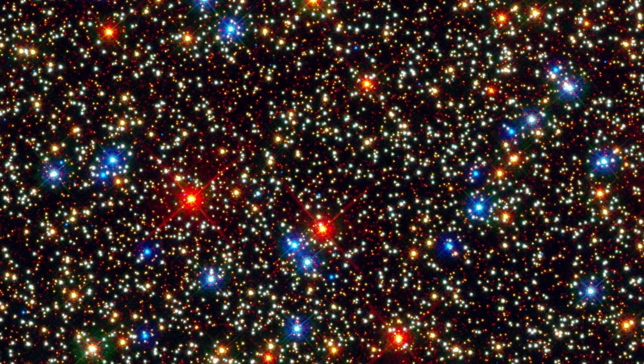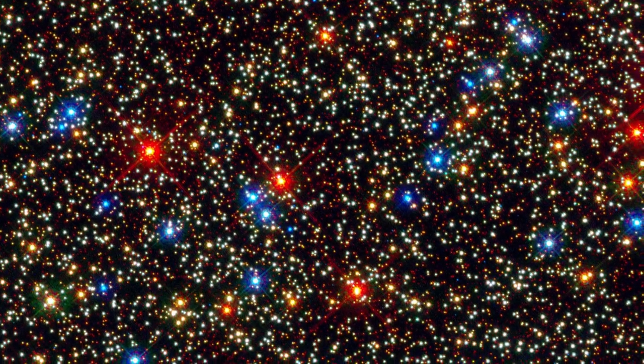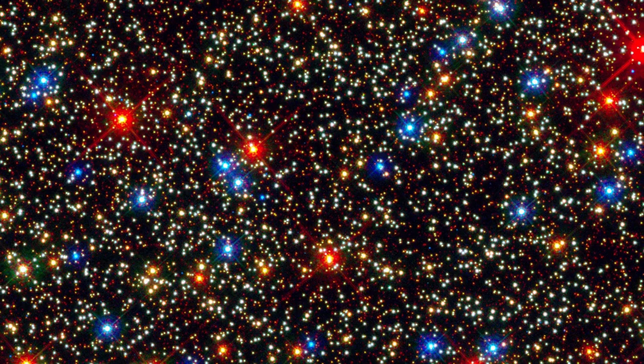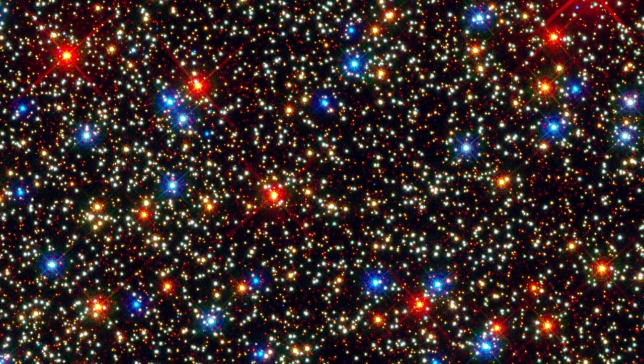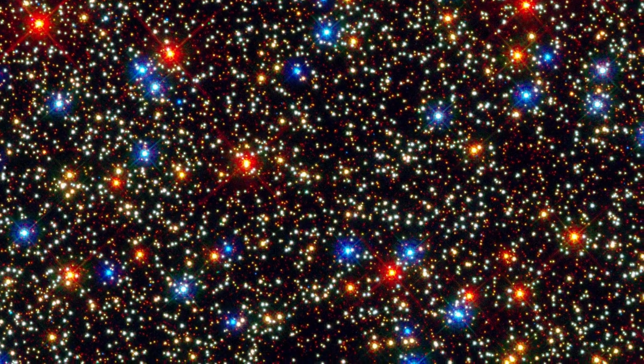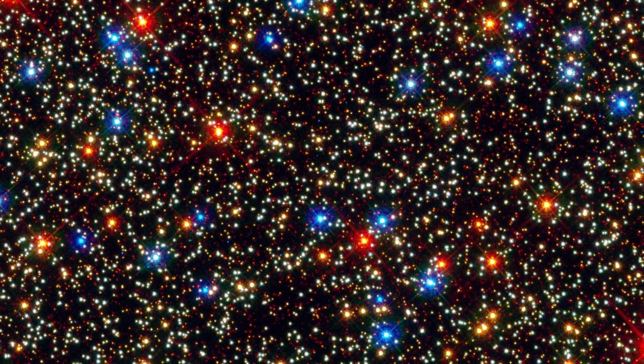This image from the Hubble Space Telescope reveals a small region of a cluster of stars. As you can see, stars have color. Some are reddish, some bluish, some white. The color a star has depends on its temperature, as dictated by Wien's law.